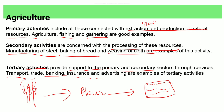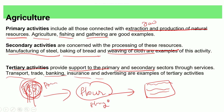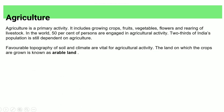In the wheat-to-biscuit example, growing wheat is the primary process. Processing it in a factory is the secondary process. Agriculture is a primary activity which includes growing crops, fruits, and vegetables.